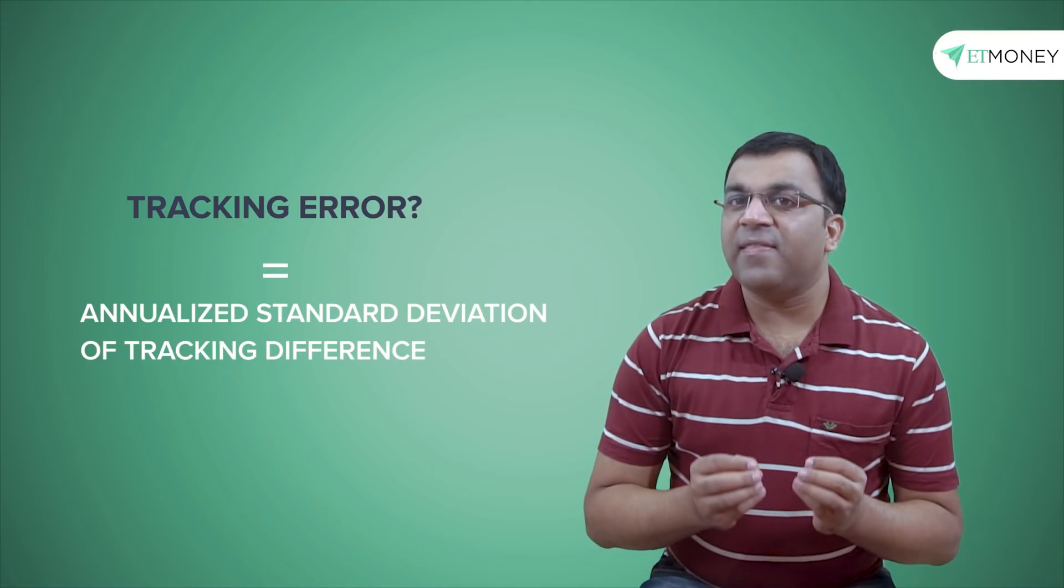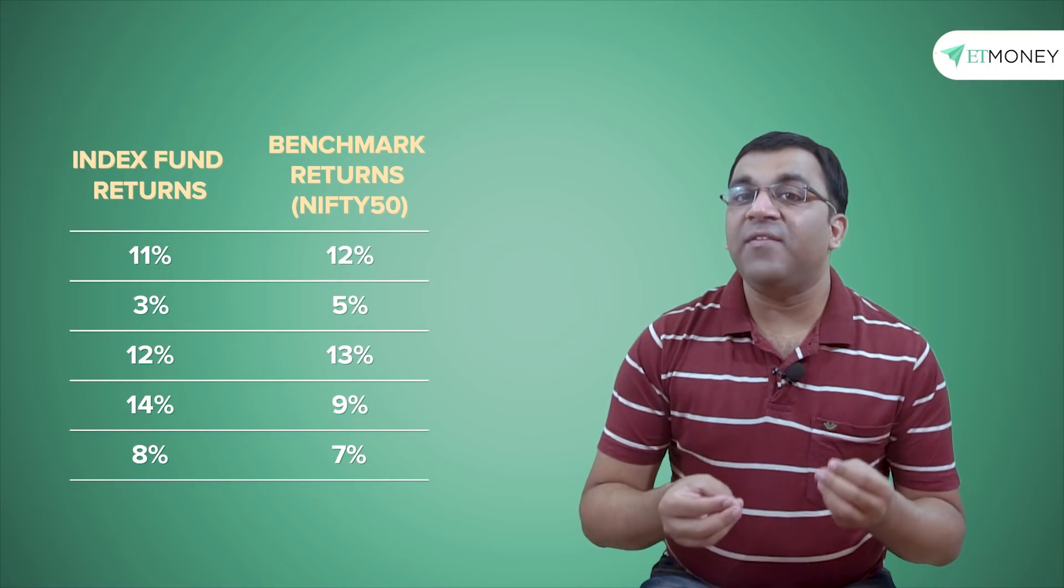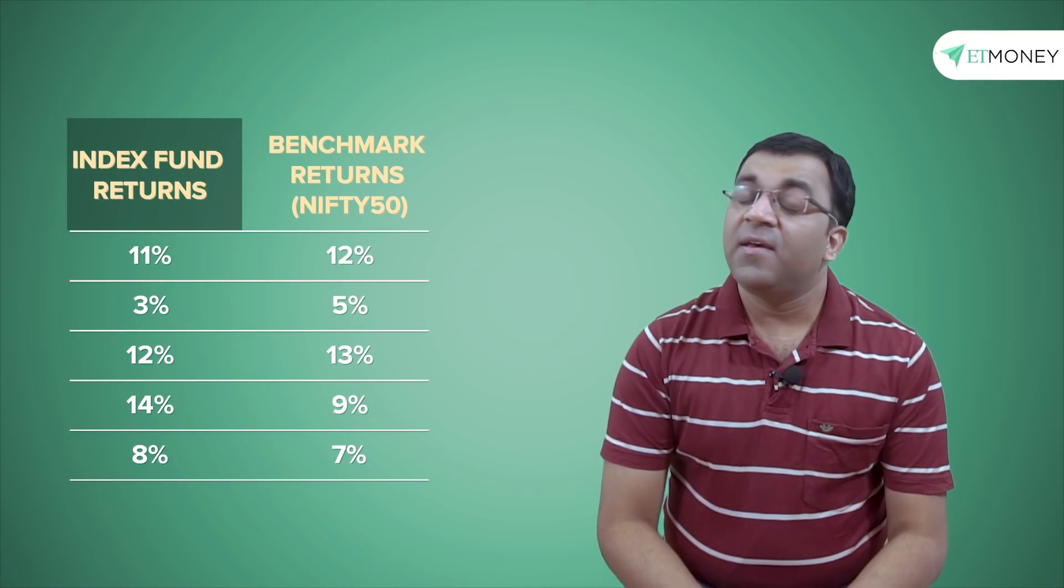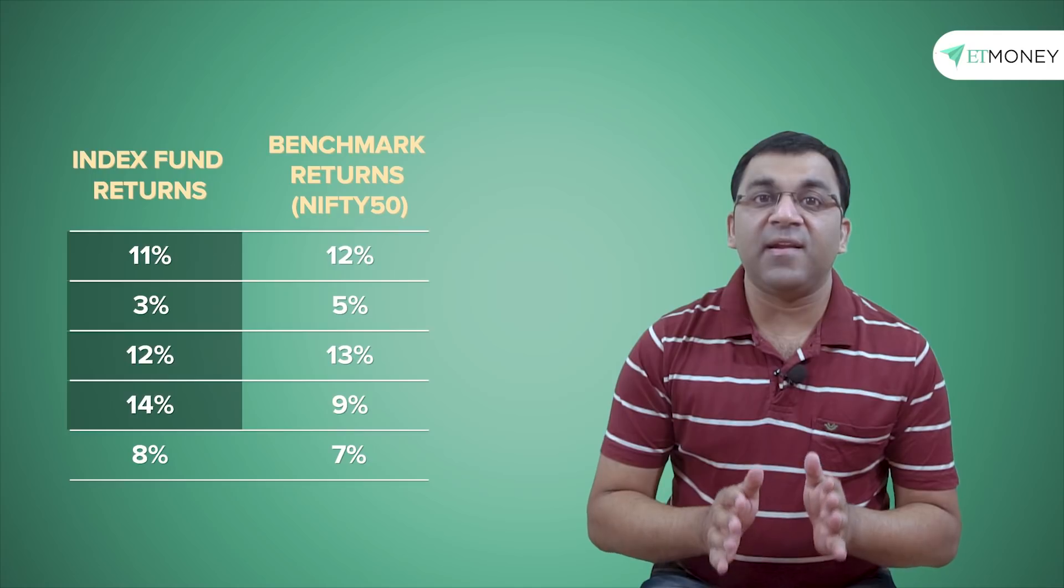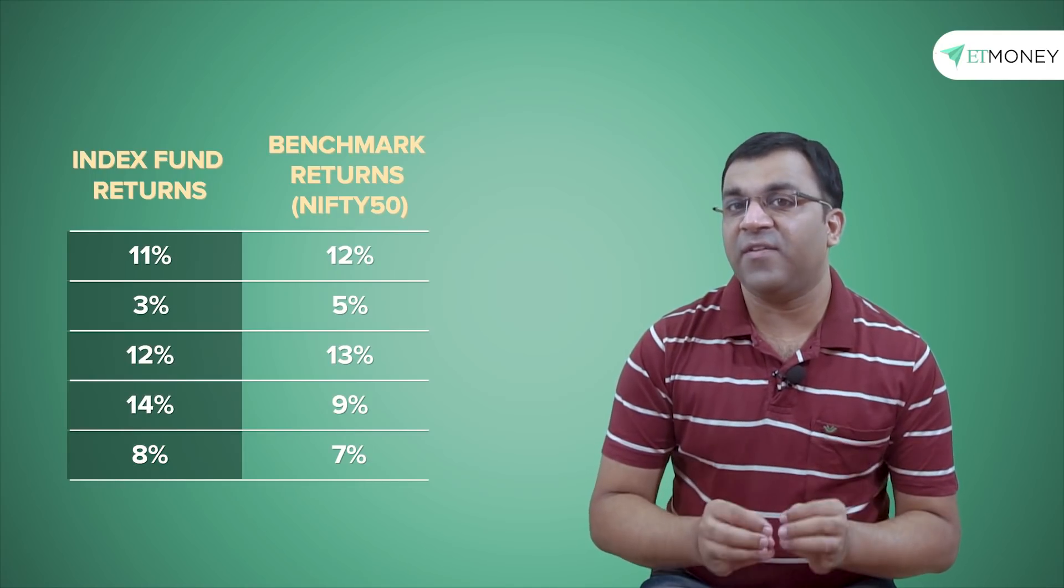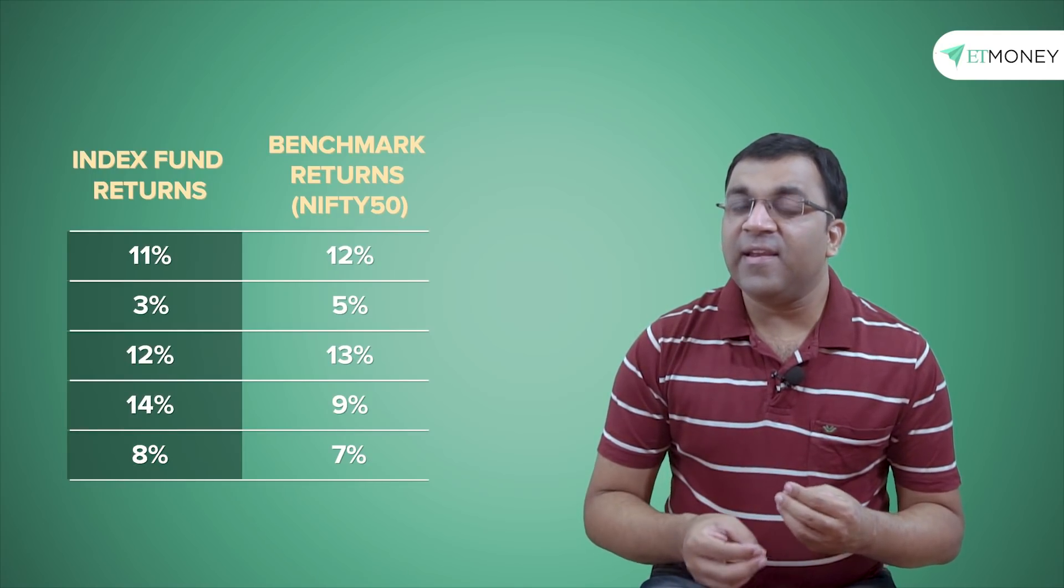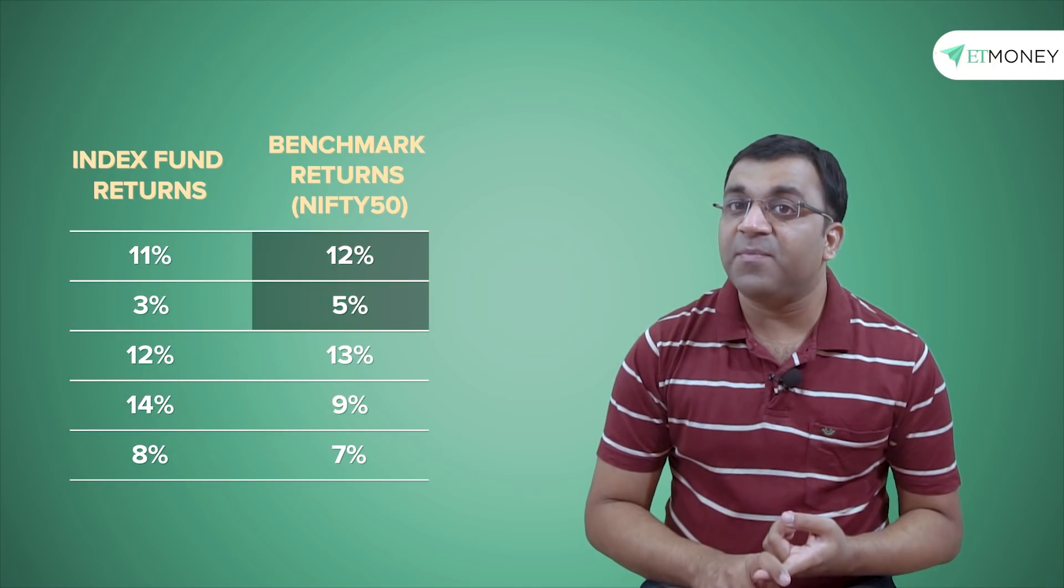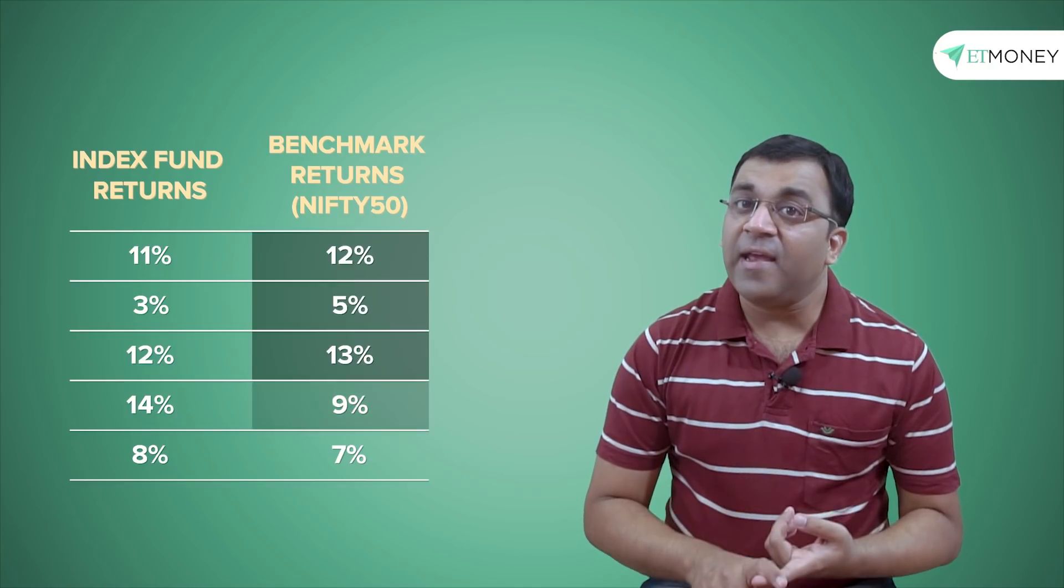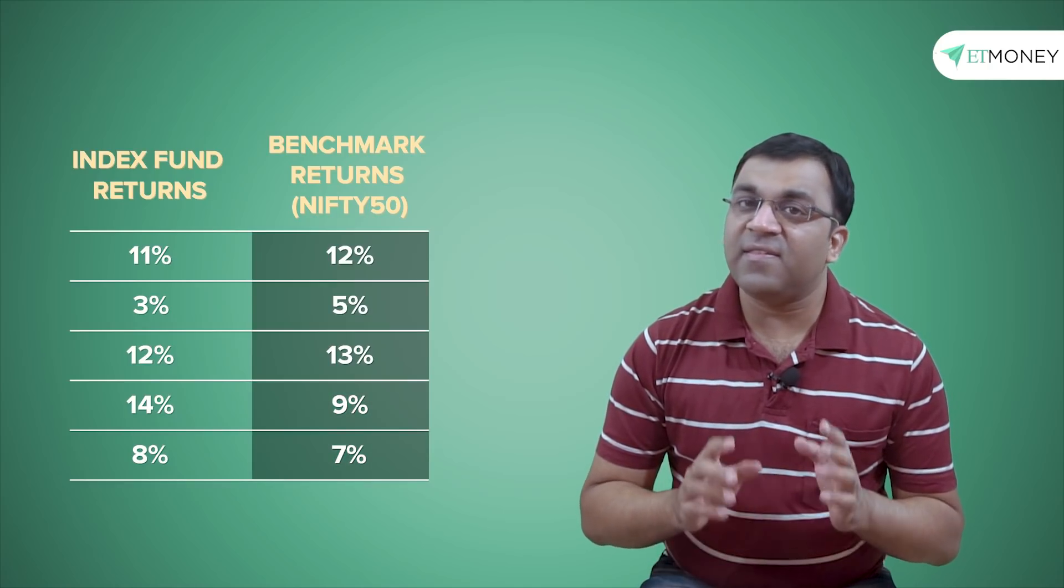Let's understand this better with a simple illustration. What we have here is the last 5 years returns of a Nifty 50 benchmarked index fund. This fund delivered returns of 11%, 3%, 12%, 14%, and 8% in these 5 years. Correspondingly, let's say the Nifty 50 delivered annual returns of 12%, 5%, 13%, 9%, and 7% in the same period.